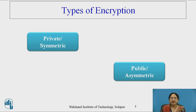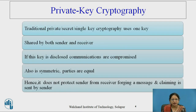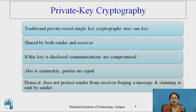There are two types of encryption: private, which is also known as symmetric, and another one is public, which is also called as asymmetric crypto system. In private key cryptography, it is a traditional private, also called as secret or single key cryptography, because it uses a single key shared by both sender and receiver. Bob and Alice will use a single key for communication.